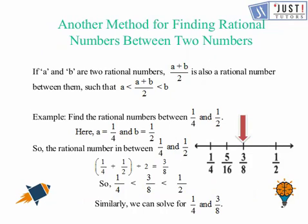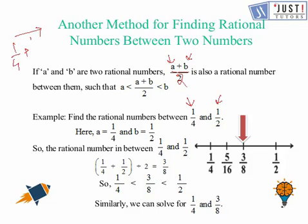But what if the denominator is different? Then we use this method: add both rational numbers and divide by 2. For example, to find a number between 1/4 and 1/2, we calculate a plus b: 1/4 plus 1/2 equals 3/4. Then 3/4 divided by 2 equals 3/8. So the rational number 3/8 lies between them.